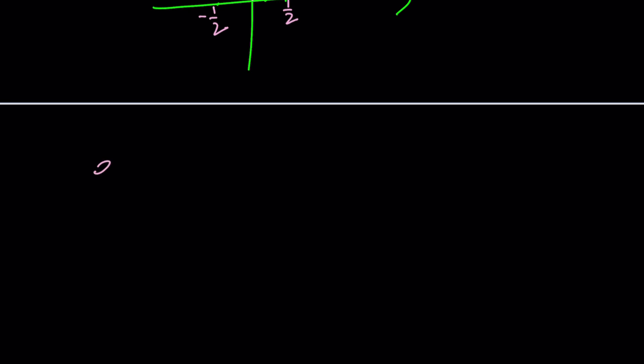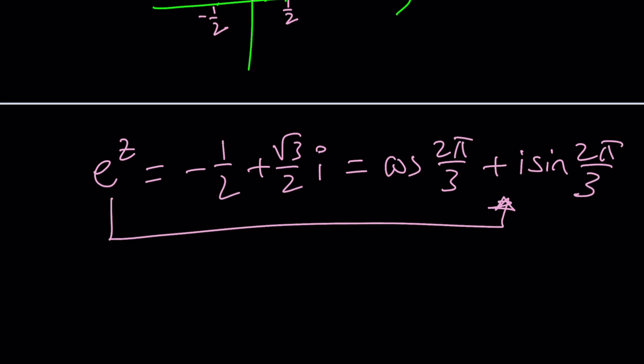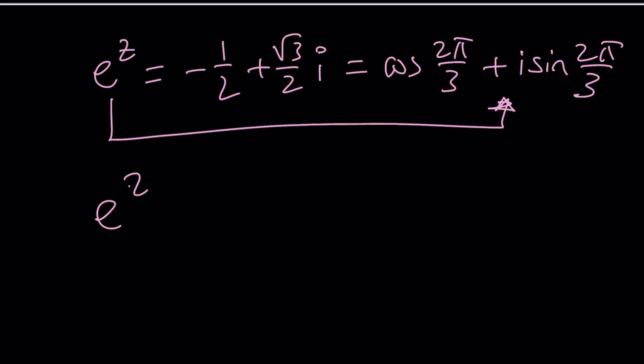So now we can write this number as follows. We have e to the power z equals negative one half plus root 3 over 2i. And now that can be written as cosine of 2 pi over 3 plus i sine 2 pi over 3. But how am I going to set an exponential to this? Again, Euler's formula. Of course, this means e to the power i theta, and theta is 2 pi over 3.